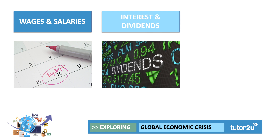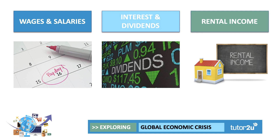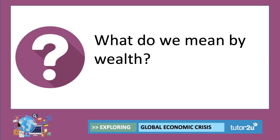People do have savings from which they can earn interest. People have shares from which businesses occasionally pay out dividends to shareholders. Some people - several million in the UK - own property, and that can generate a flow of rental income. Add those together and you get household income. So what's the difference between income and wealth?